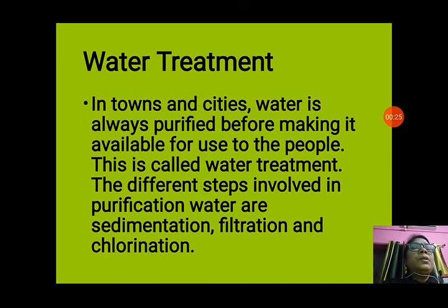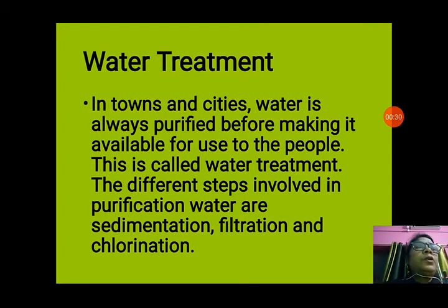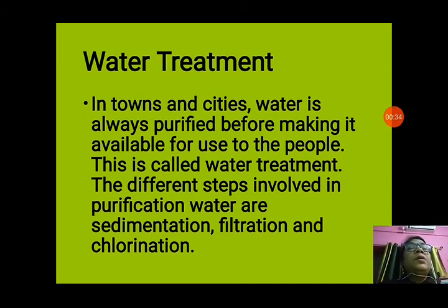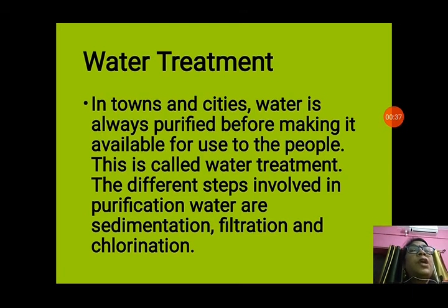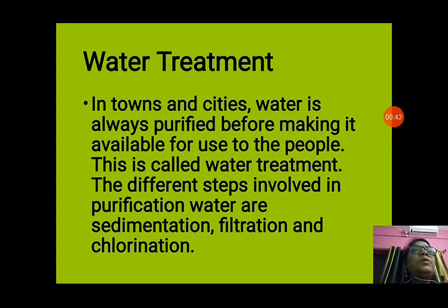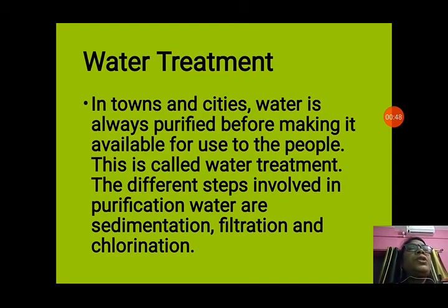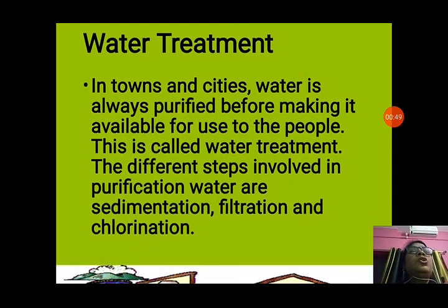This is called water treatment. Water may contain different types of impurities, so all these impurities are purified before sending it to different houses for the use of people. The different stages involved in purification of water are sedimentation, filtration, and chlorination.